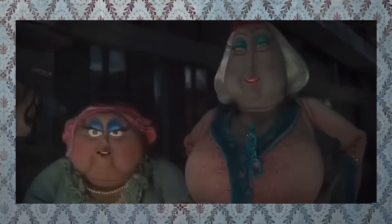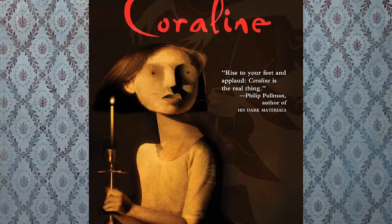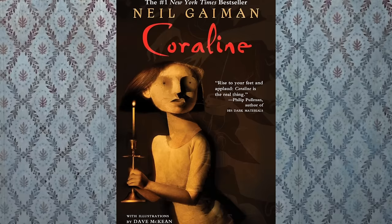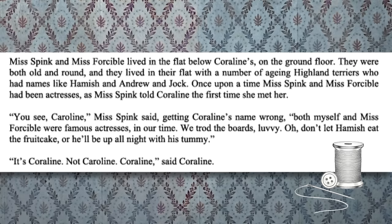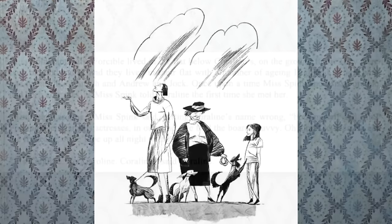Let's start by looking at the hidden lesbian elements in the book. We're introduced to Miss Spink and Miss Forcible near the beginning of the novel, described as follows: Miss Spink and Miss Forcible lived in the flat below Coraline's on the ground floor. They were both old and round, and they lived with a number of ageing Highland Terriers who had names like Hamish and Andrew and Jock. Once upon a time, Miss Spink and Miss Forcible had been actresses. As Miss Spink told Coraline the first time she met her: 'You see, Caroline,' Miss Spink said, getting Coraline's name wrong, 'both myself and Miss Forcible were famous actresses in our time. We trod the boards, lovey.'